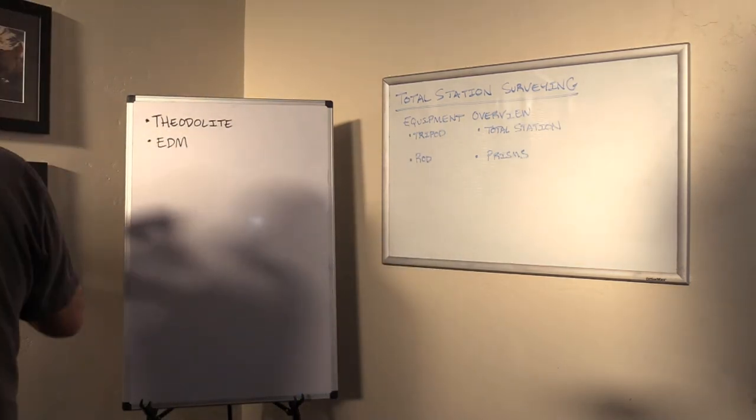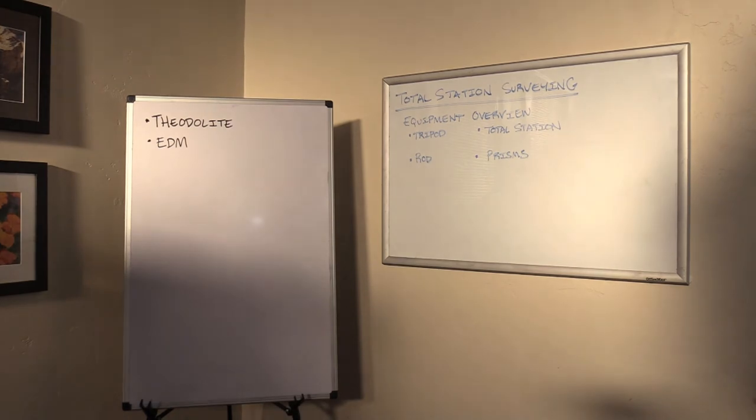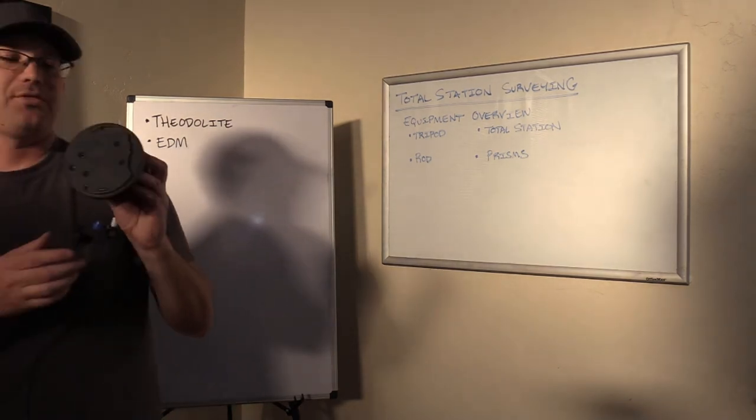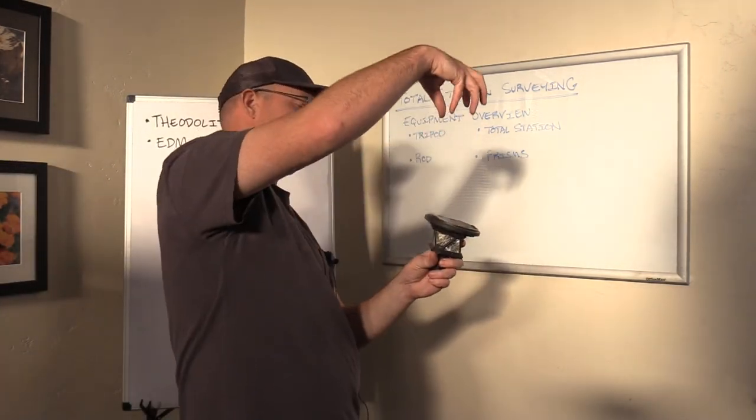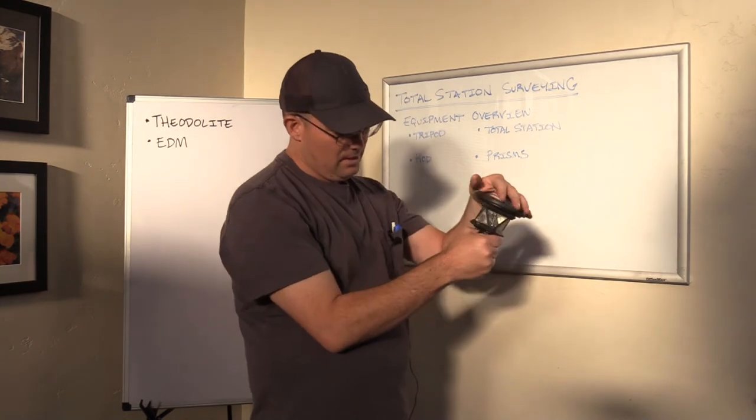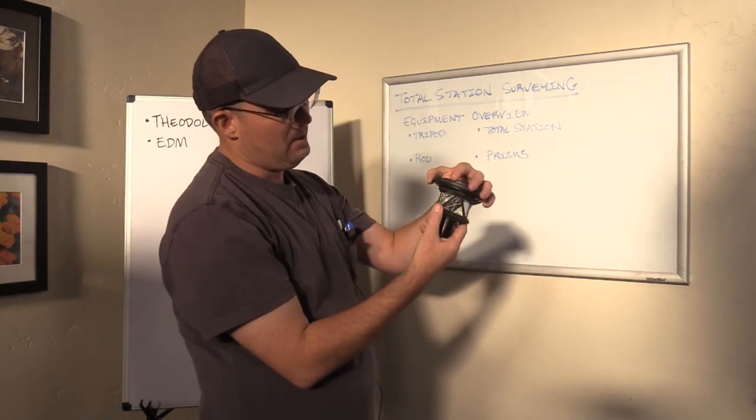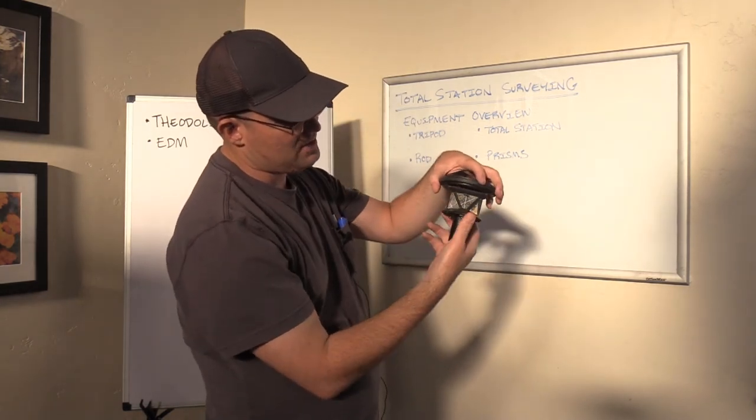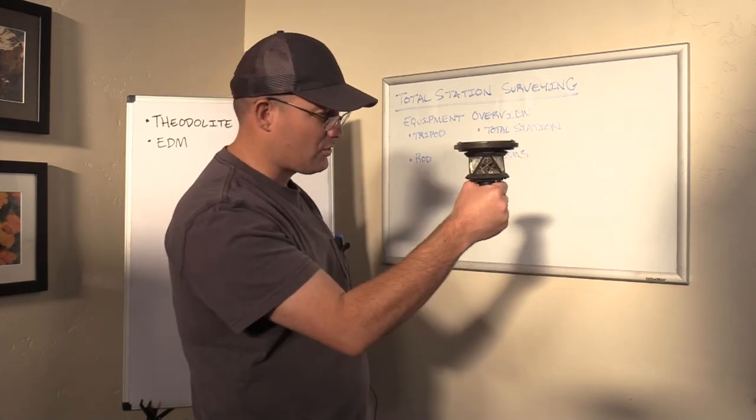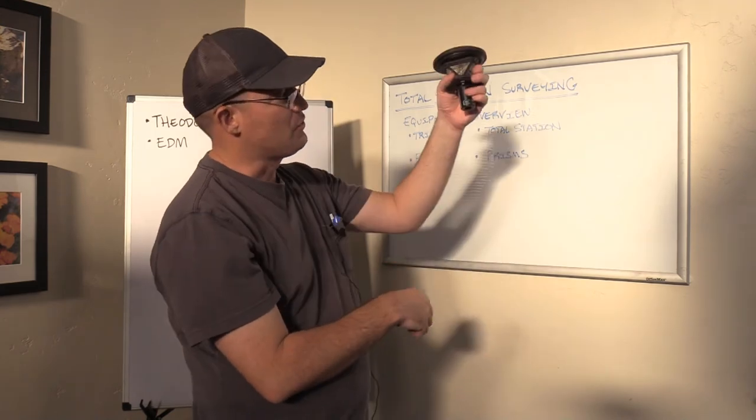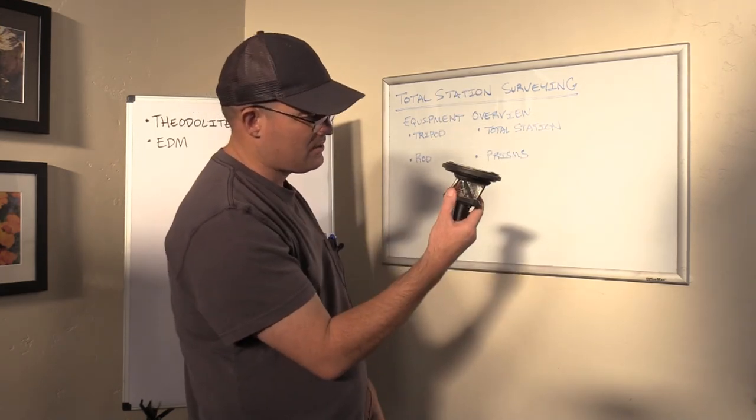So this is what a 360 prism looks like. There's different kinds of 360 prisms. Some of them are tall and skinny. There's different kinds, but this is the one that we have with our robot. And the reason it's called a 360 prism, as you can see, it's got a prism face facing each direction. It makes it easier for the robotic total station to track the prism. It goes on top of the rod, just like the other prism does.